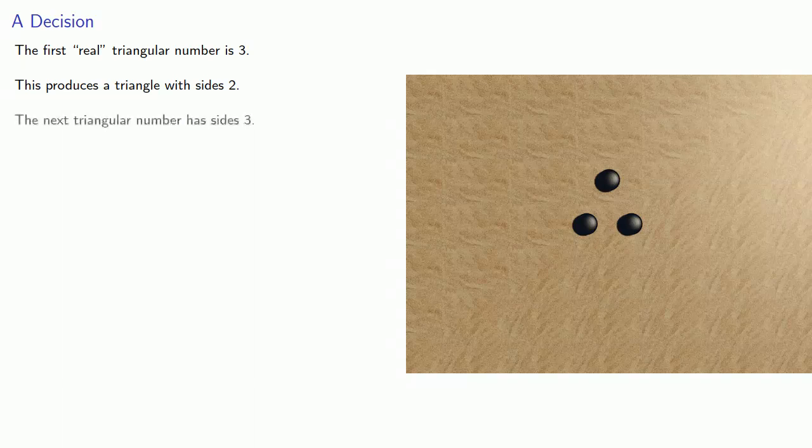Well, the next triangular number would have sides of length three. So let's see if we can put that together. So we'll start with the side of length three. We'll attach another side of length three. And when we do that, notice that we form that third side of length three. And so our next triangular number is six.